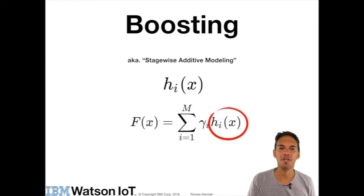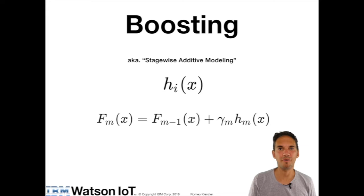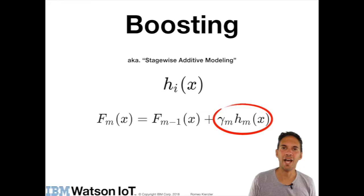This is another notation which is maybe a bit more intuitive. So if you want to define the model capital F_m of x it is equal to capital F_{m-1} of x plus gamma m times h_m of x where F_{m-1} of x is the previous model and gamma m times h_m of x is the weighted current model.